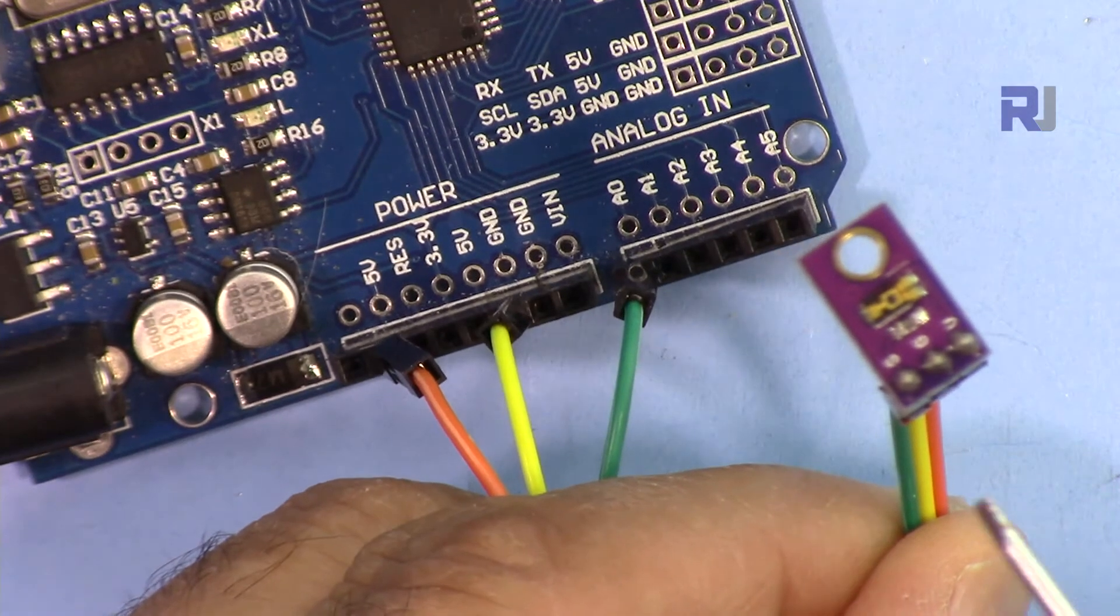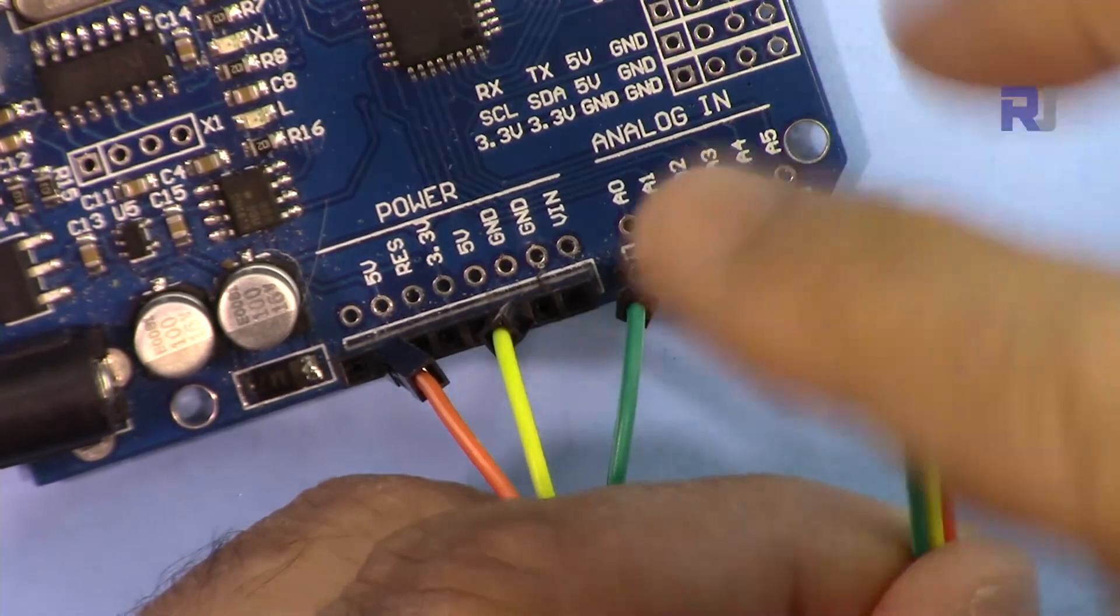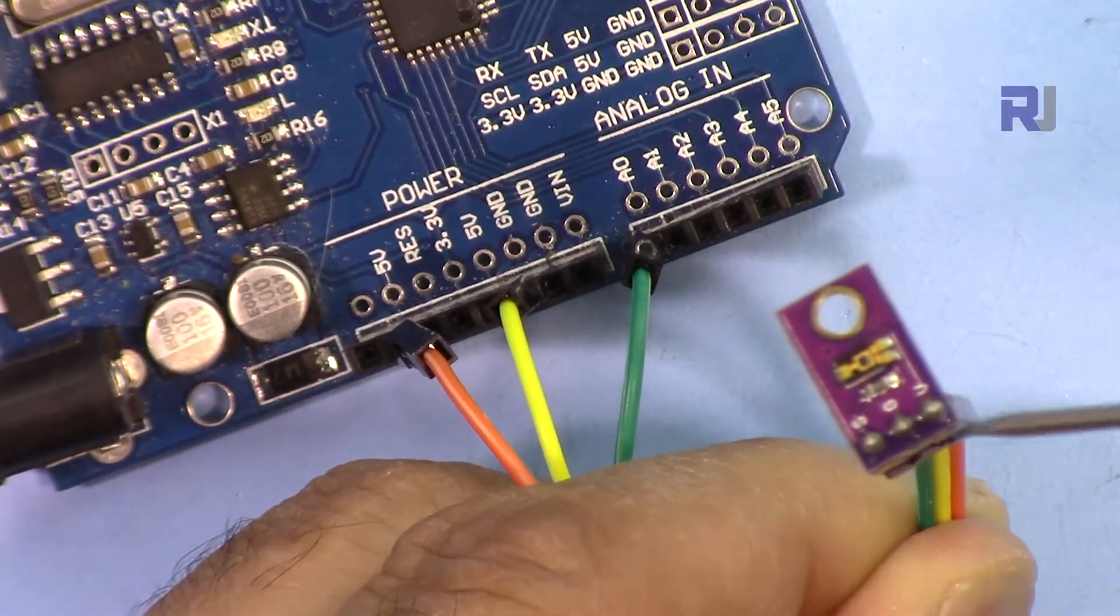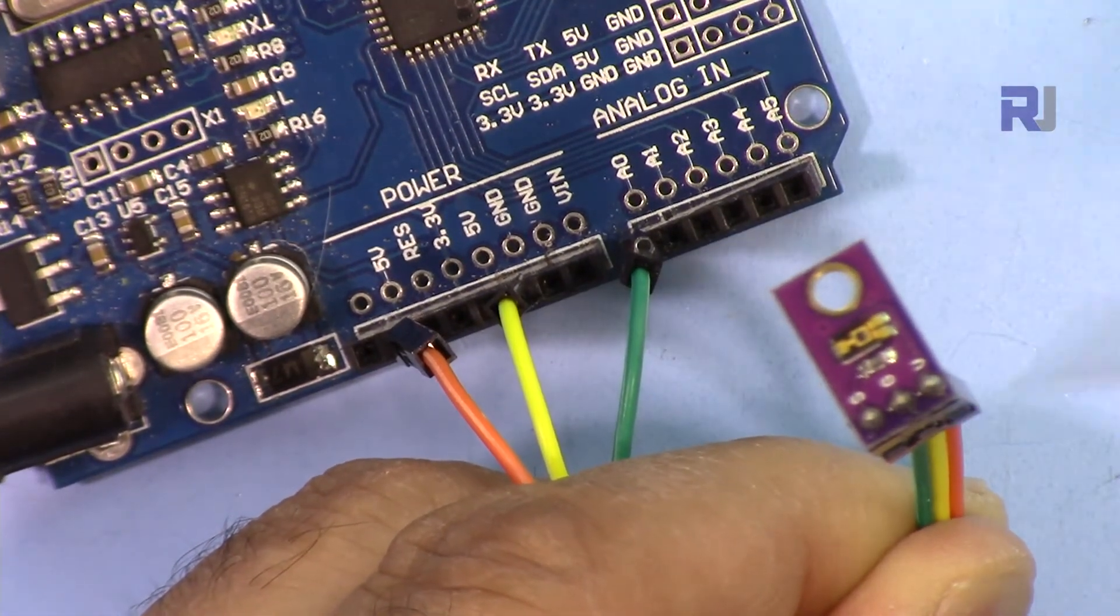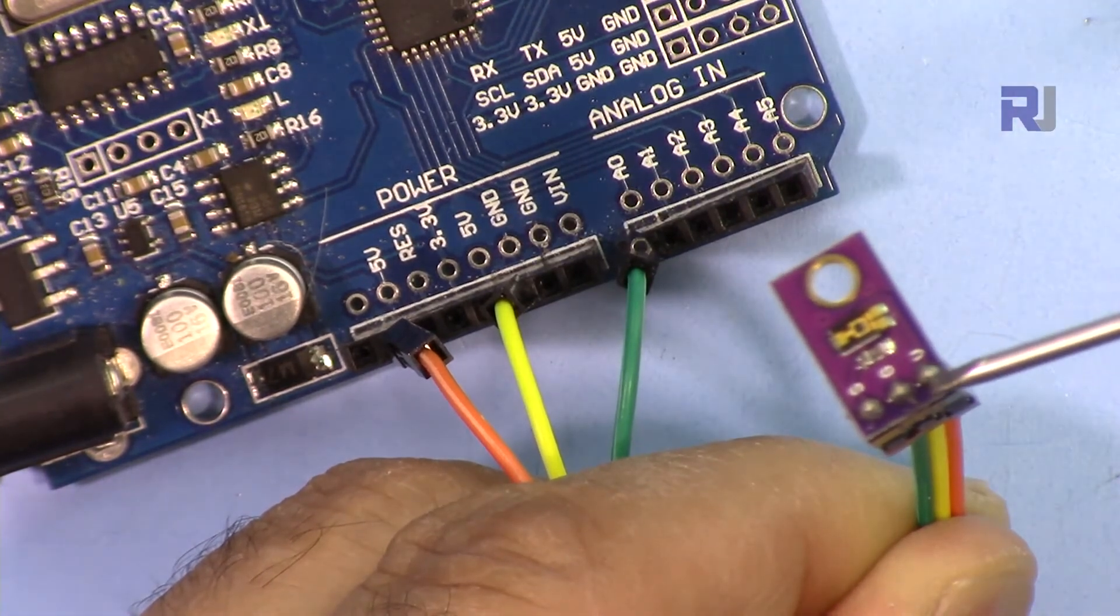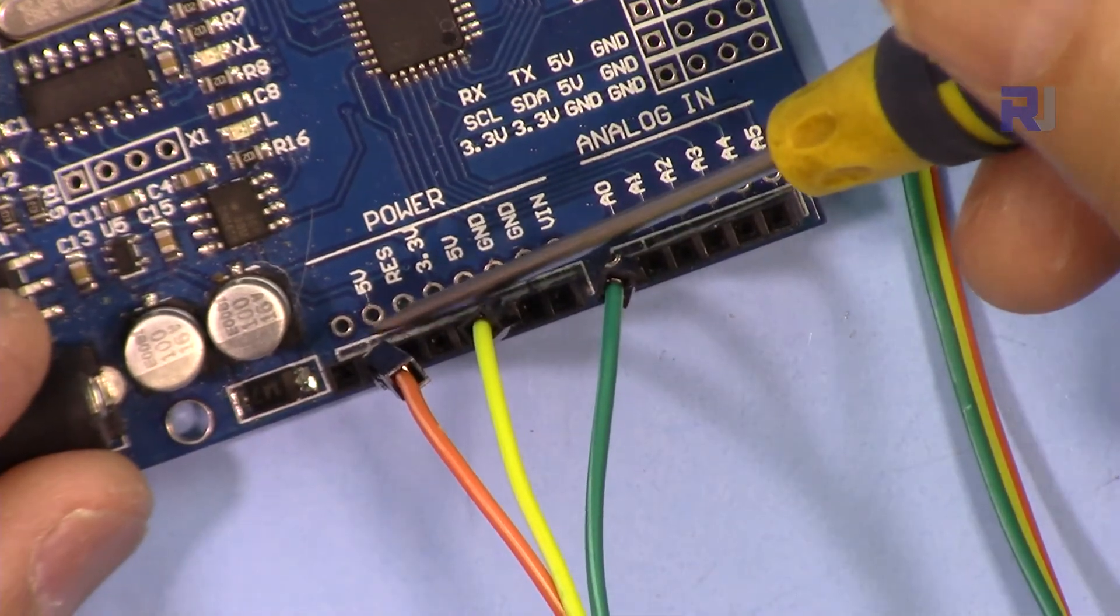Here is how you connect the wires. We have S, G, and V. S is the signal, the green wire is connected to A1. G is the ground and it's connected to GND. And V is for the voltage, that's the collector, connected to five volts.